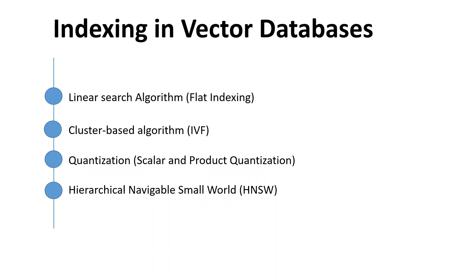Embeddings or vector embeddings are numerical representations of data like text and images in a high-dimensional vector space. If two pieces of data are similar to each other semantically, then their numerical representations will be stored closer to each other. These vector databases, which store vector embeddings, need some mechanism to allow LLMs to access this data rapidly. This is where indexing in vector databases comes in very handy. These vector databases provide user-friendly interfaces to interact with embeddings and their associated data, using traditional databases behind the scenes to store embeddings.